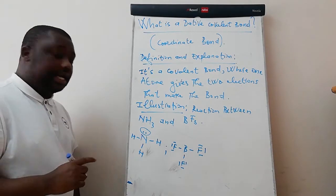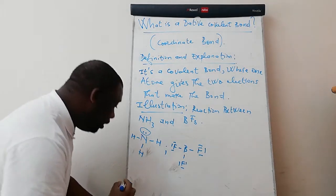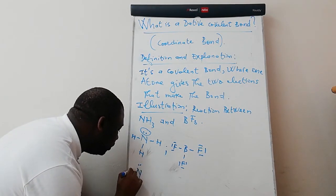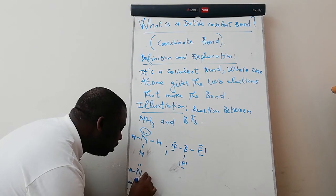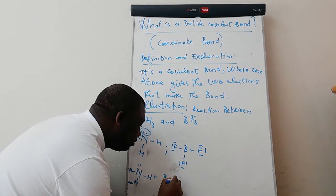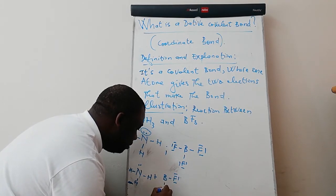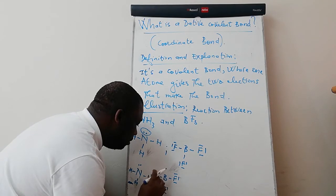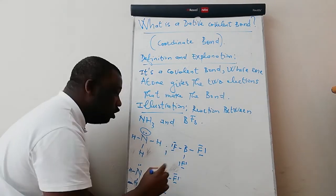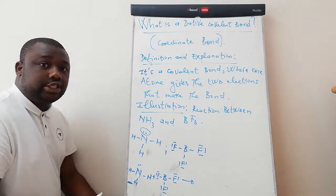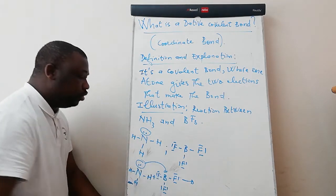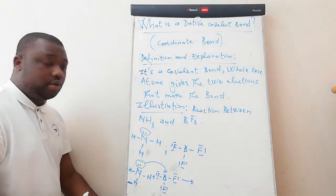Now, let us consider the reaction between these two components. What will actually happen? We have ammonia here with a lone pair of electrons, plus BF3. So what will happen? This atom of nitrogen gives the two electrons to boron to make a bond, which is our dative covalent bond.